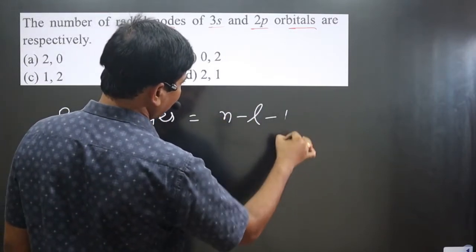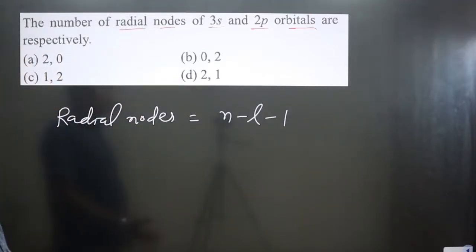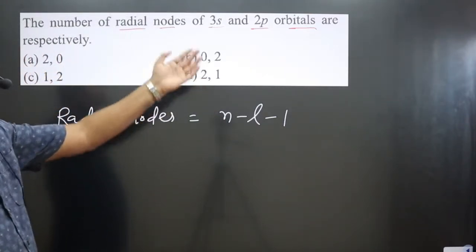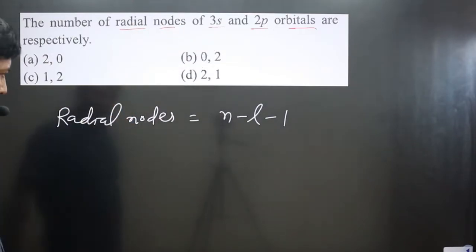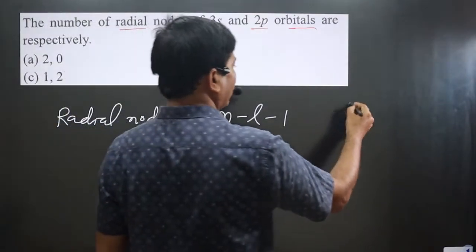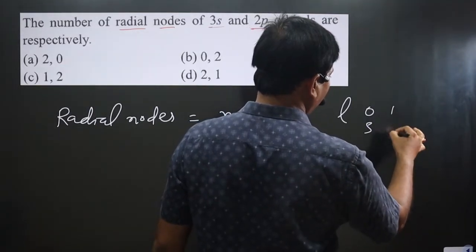This is the formula. We can find out n as well as l value from 3s and 2p. Always keep in mind: l value is 0 for s orbital, 1 for p orbital, 2 for d orbital, and 3 for f orbital.